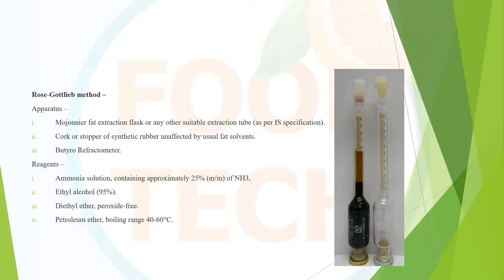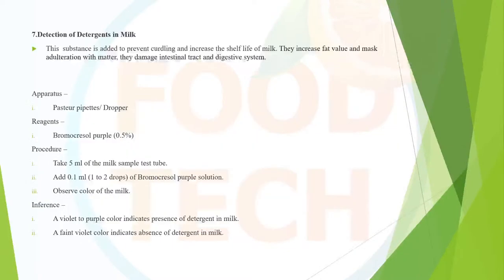A Zeiss refractometer is required for this test. Detection of detergents in milk: detergents are mainly added to prevent curdling and increase shelf life, and sometimes to increase fat content. However, detergents can dangerously damage the intestinal tract and digestive system. The reagent used is bromocresol purple. Procedure: add milk to a test tube, then add bromocresol purple solution; violet color indicates the presence of detergent, while faint violet color indicates no detergent.